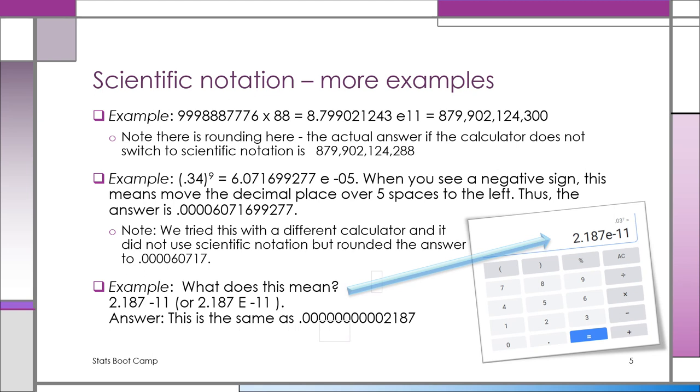The third example, very quickly, we're going to look at it again. What does it mean? If we see 2.187 and then minus 11, or as you see on the display on the calculator in the image, 2.187 e negative 11. That means it's going to be a very, very tiny number because we're going to move the decimal point to the left, 11 spaces.